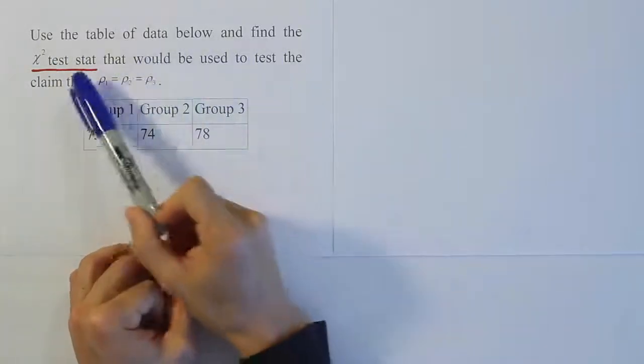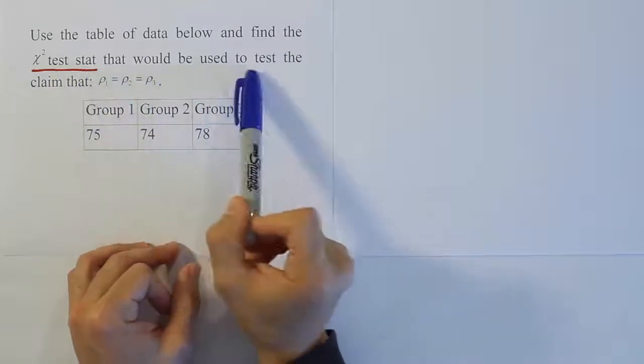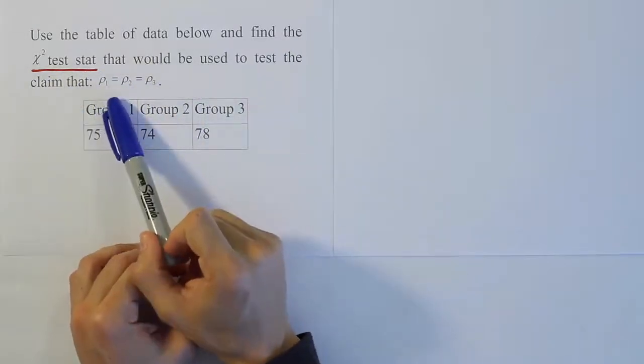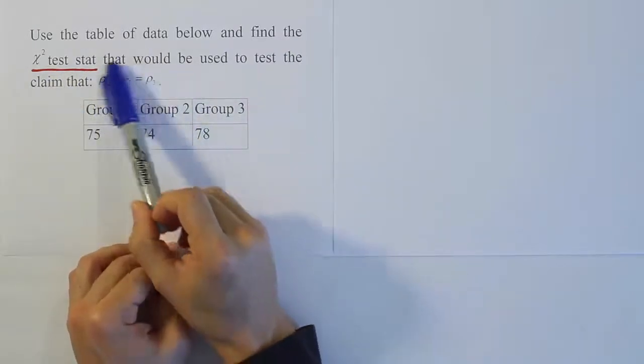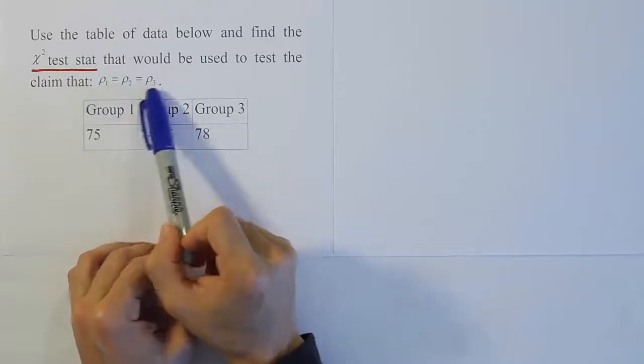In the table of data below, find the chi-squared test stat that would be used to test the claim that row 1 equals row 2 equals row 3, or in other words that all three proportions are equal to one another.